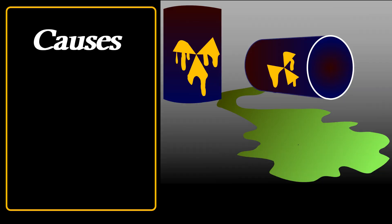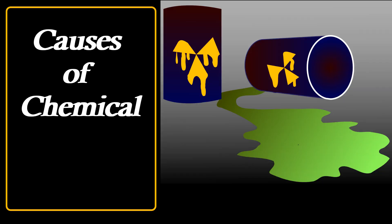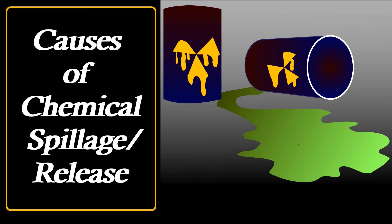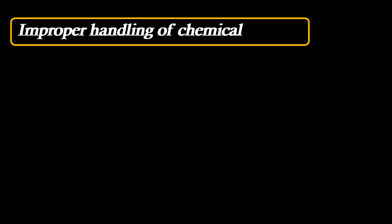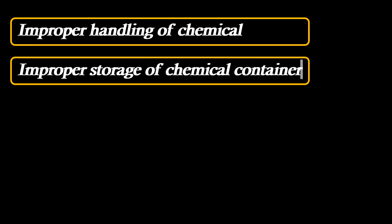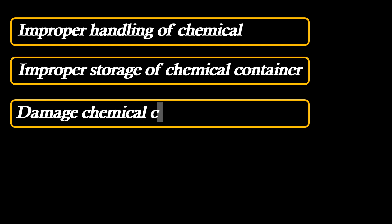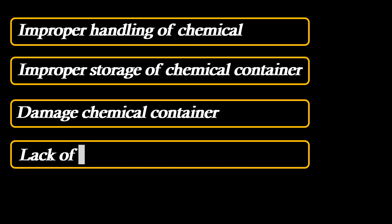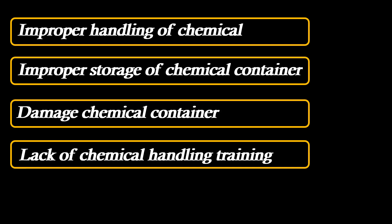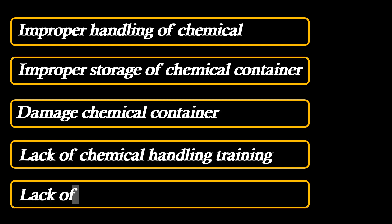Causes of chemical spillage or release include: improper handling of chemical, improper storage of chemical container, damaged chemical container, lack of chemical handling training, and lack of supervision.